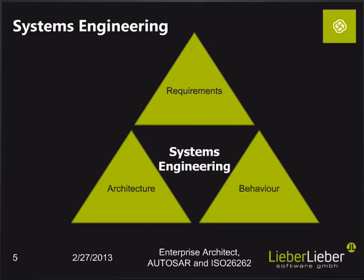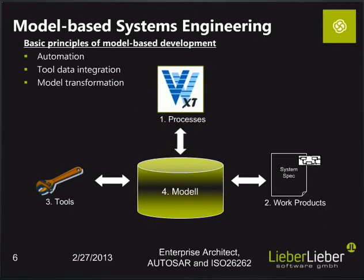What is meant by behavior here is more formal behavior. When you use model-based systems engineering, you have a model as a central database for your development. The difference to the classical document-centric process is that this model has a formal structure and you can manipulate and put data in with tools. The structure of this model is defined by the processes, and work products can be derived from these models automatically.